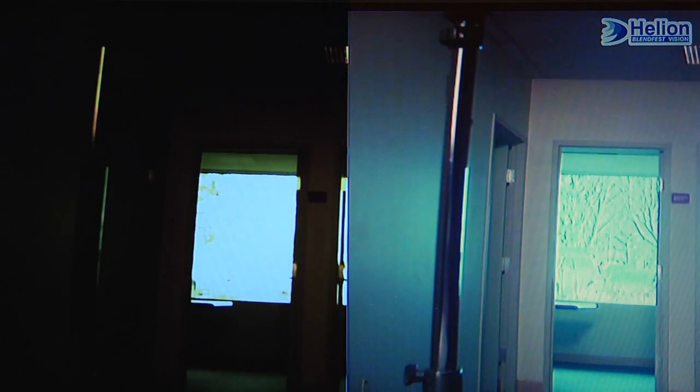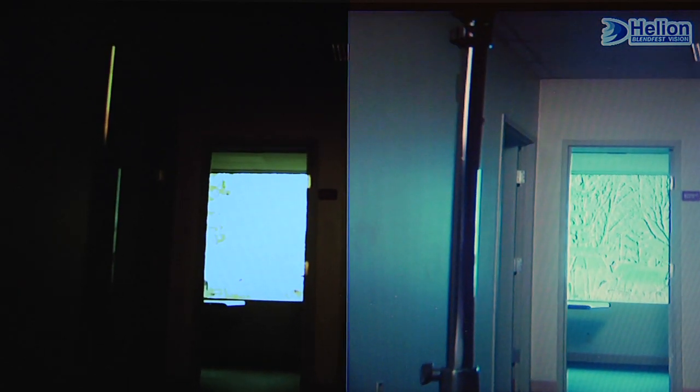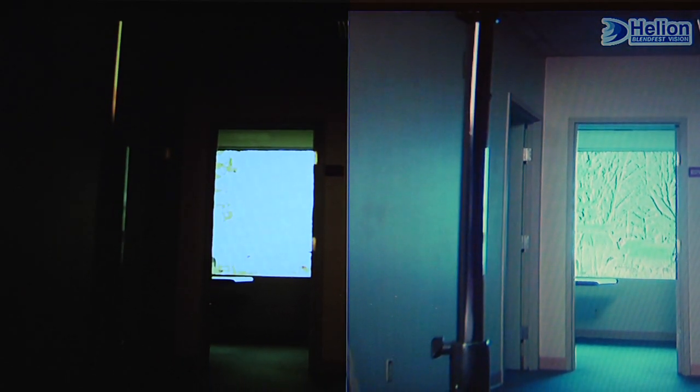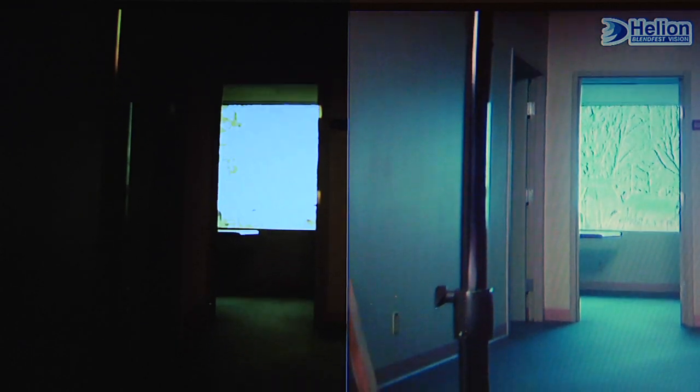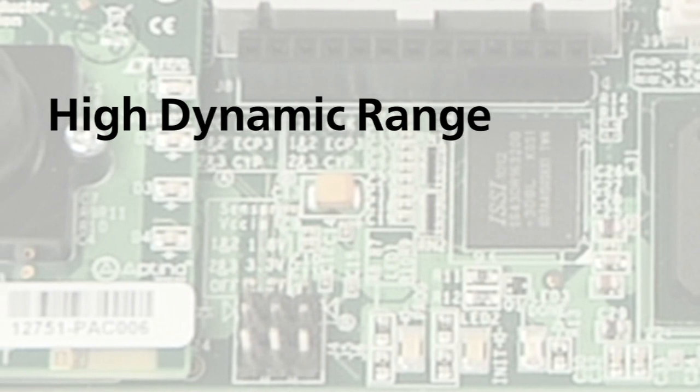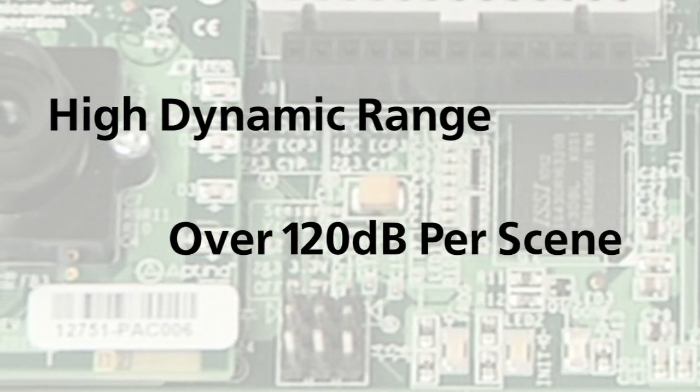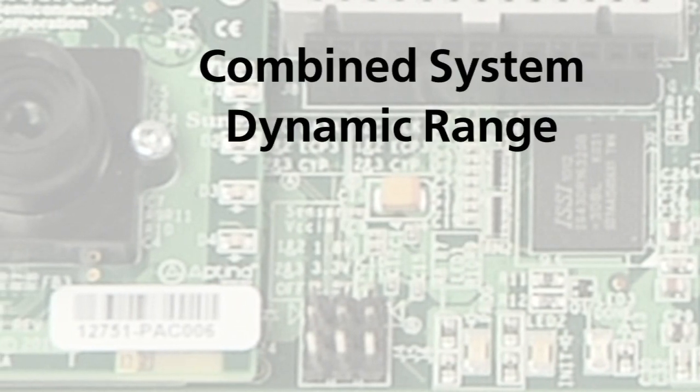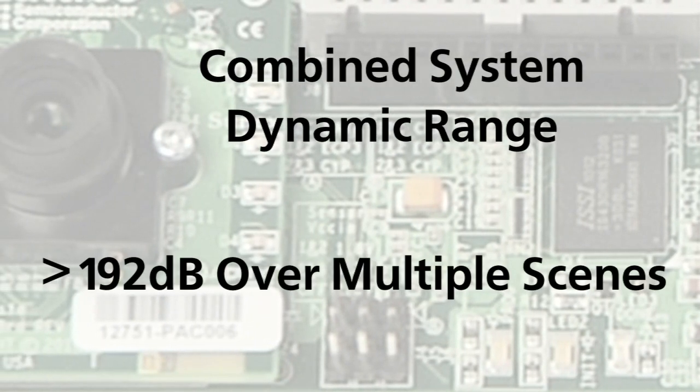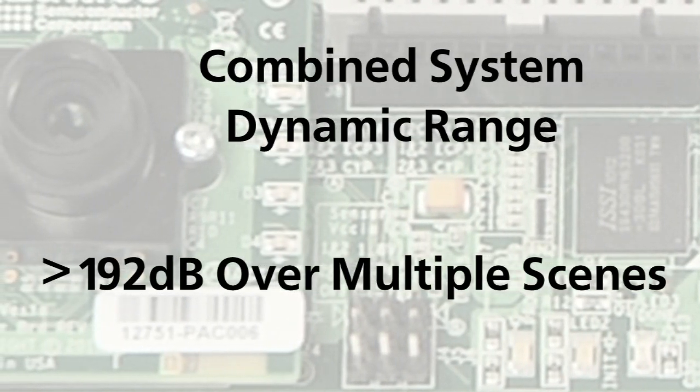The same differences in images show up if we point the lens to a dark area inside the room while part of the lens is still looking at a bright scene outside the window. The Lattice Video Camera Development Kit supports high dynamic range greater than 120 dB per scene and can provide a combined system dynamic range greater than 192 dB over multiple scenes.